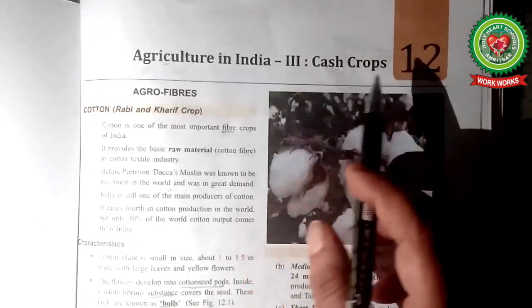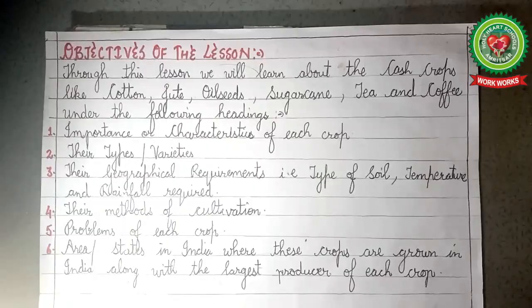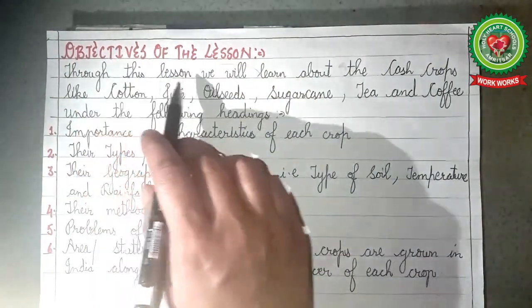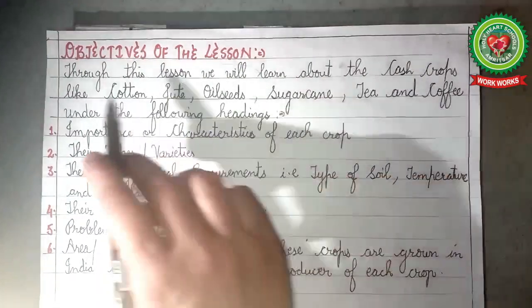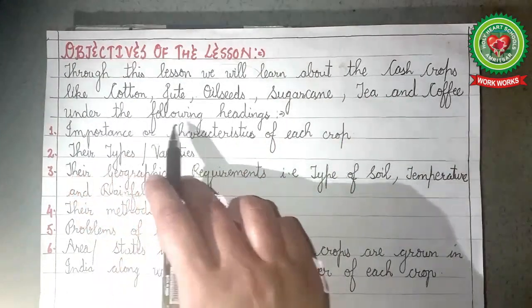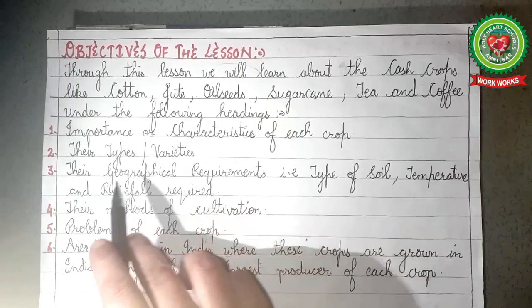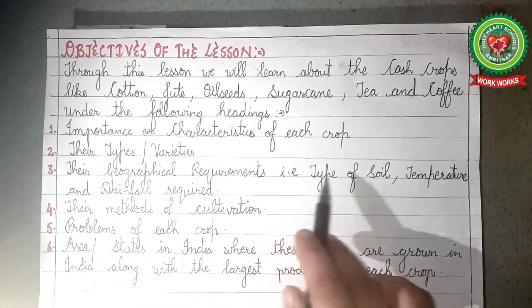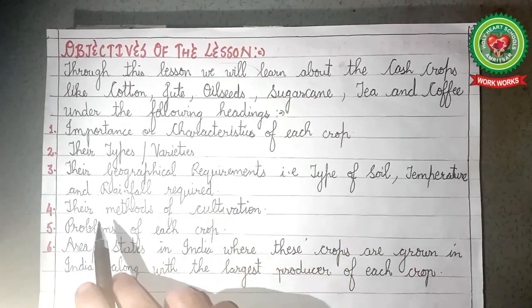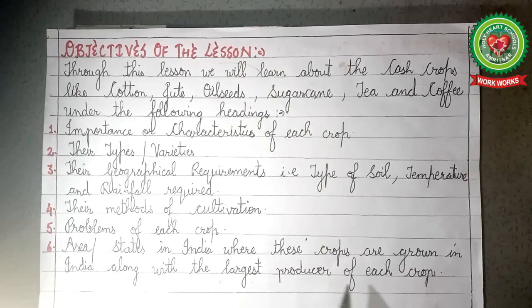Welcome to the geography class. The lesson I am going to take today is lesson number 12: Agriculture in India, Part 3 — Cash Crops, with the following objectives. Through this lesson we will learn about cash crops like cotton, jute, oilseeds, sugarcane, tea, and coffee, under the headings: importance or characteristics of each crop, their types and varieties, geographical requirements, methods of cultivation, problems of each crop, and area states in India where these crops are grown, along with the largest producer of each crop.